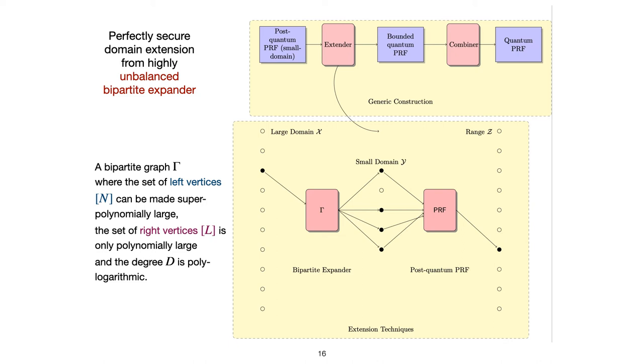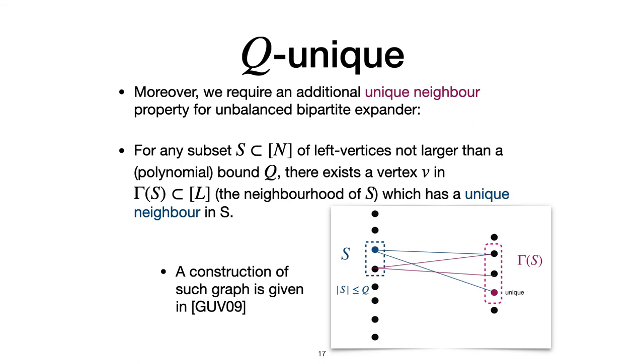So, what's an unbalanced expander? As you can see from this figure, a bipartite expander is a bipartite graph whose left vertices can be superpolynomially large where its right vertices are just polynomially large. And also, its degree is polylogarithmic. Moreover, we require an additional property for this unbalanced bipartite expander. We call it QUnique. Basically, it means that for any subset of left vertices with size not larger than Q, than some bound Q, there exists a vertex in the neighborhood of this subset connected to only one vertex in this subset. Or in other words, this vertex only has one neighbor.